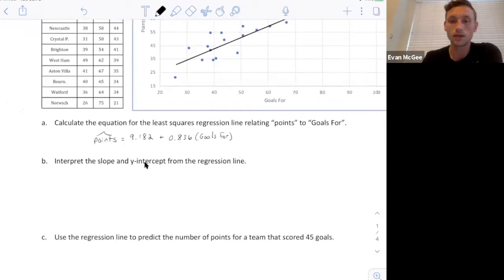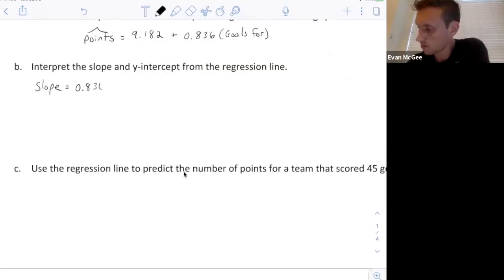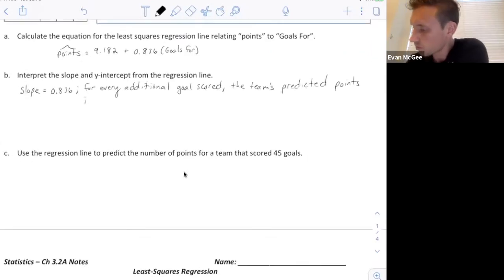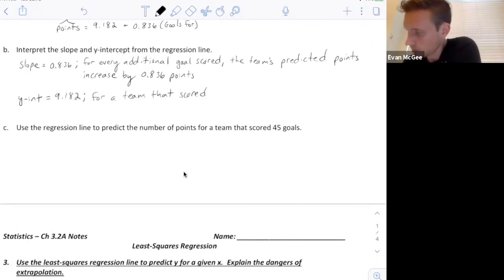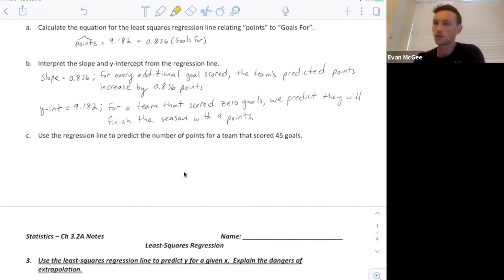Interpreting the y-intercept, the y-intercept is when the x-value is 0. If we plug 0 in here, we'd be left with 9.182. So, the y-intercept is the number of points we would expect a team to get if they scored 0 goals.